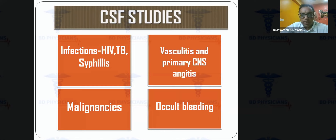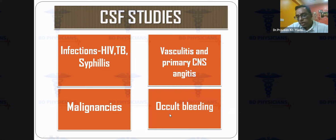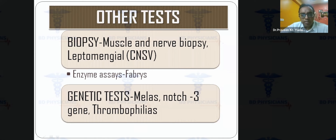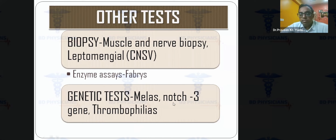CSF study is not routinely required but is indicated when infections such as HIV, TB, or syphilis are suspected, in primary CNS vasculitis, for malignancies like lymphoma with atypical cells, or when subarachnoid hemorrhage is clinically suspected but CT is negative. Brain biopsy is reserved for suspected vasculitis when other investigations are non-diagnostic. Genetic testing is indicated when mitochondrial disorders or CADASIL — caused by mutations in the NOTCH3 gene — are in the differential diagnosis.